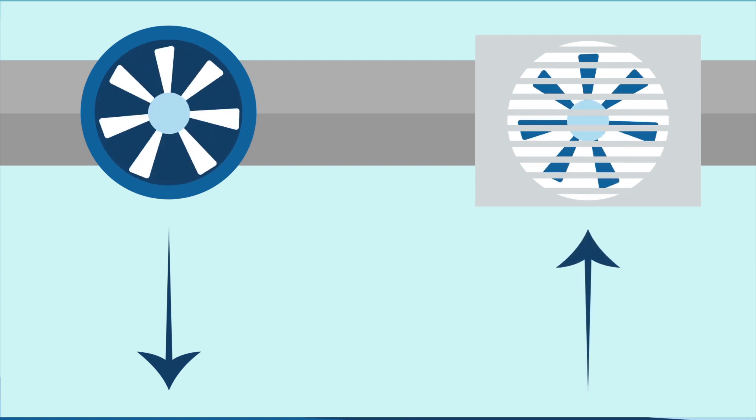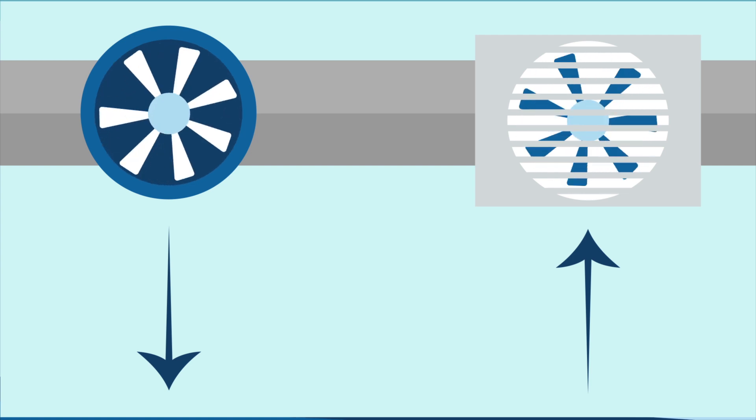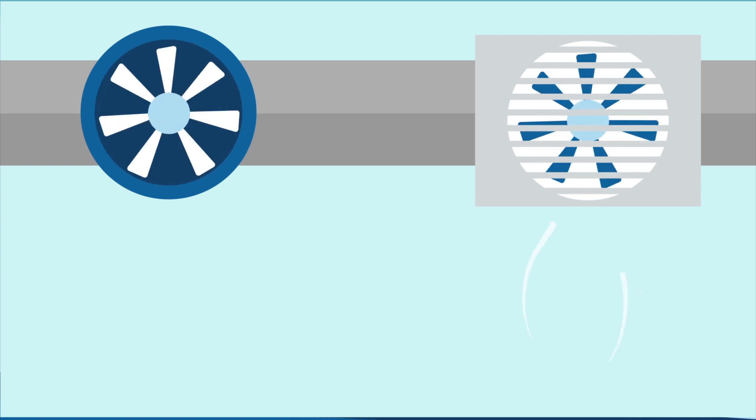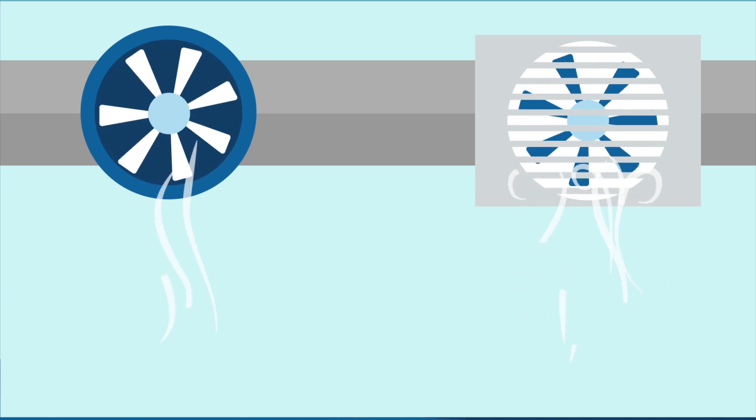Whichever fan is doing more work determines if the room is positive or negative pressure. Negative pressure means the exhaust fan is pulling more air out of the room than the supply is pushing into the room.